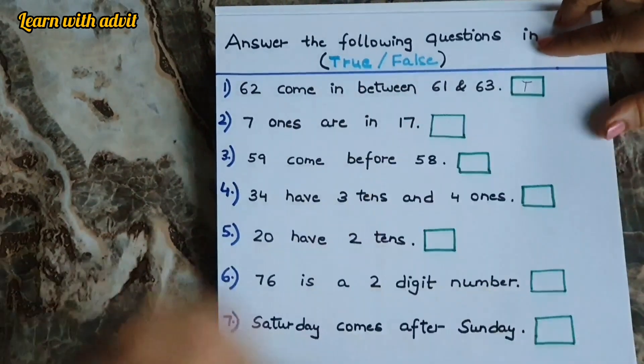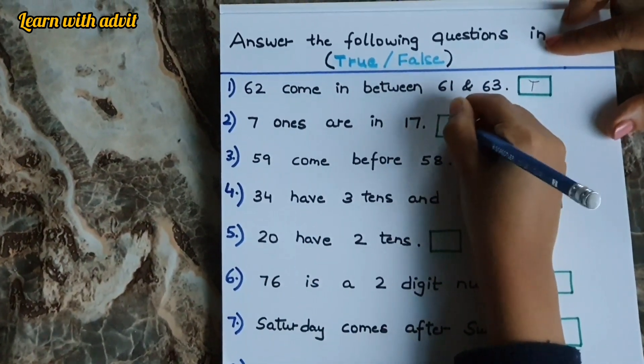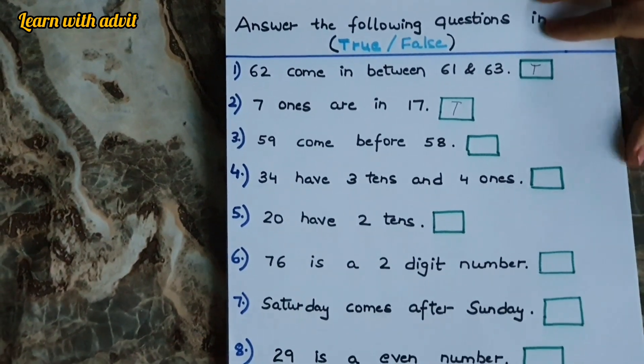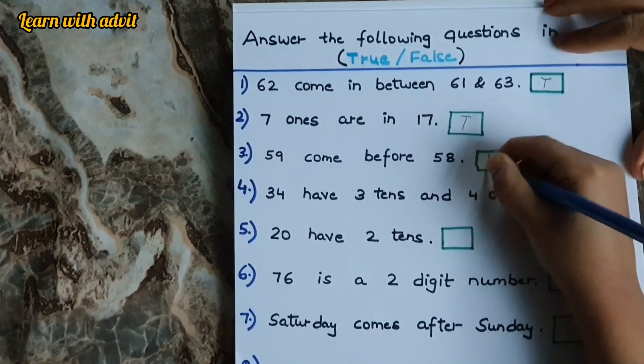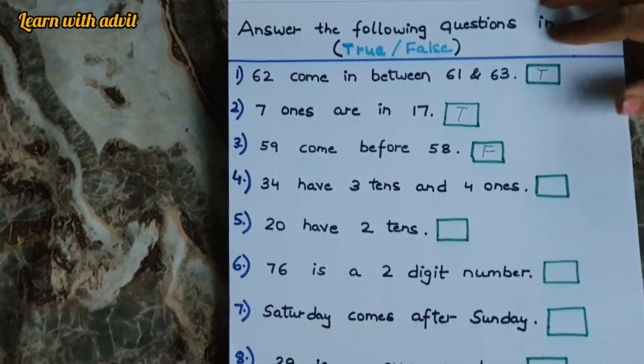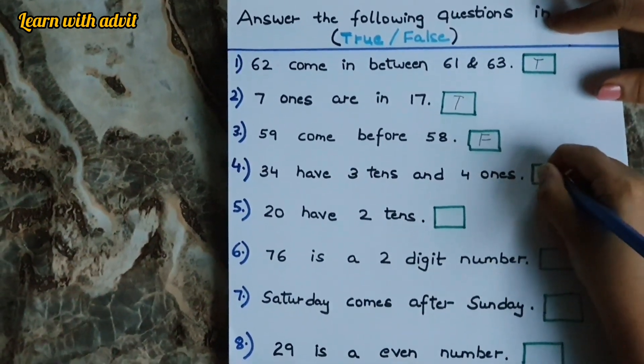7 ones are in 17. 59 comes before 58. No. It comes after 58. So F. 34 have 3 tens and 4 ones. That's true. So T.